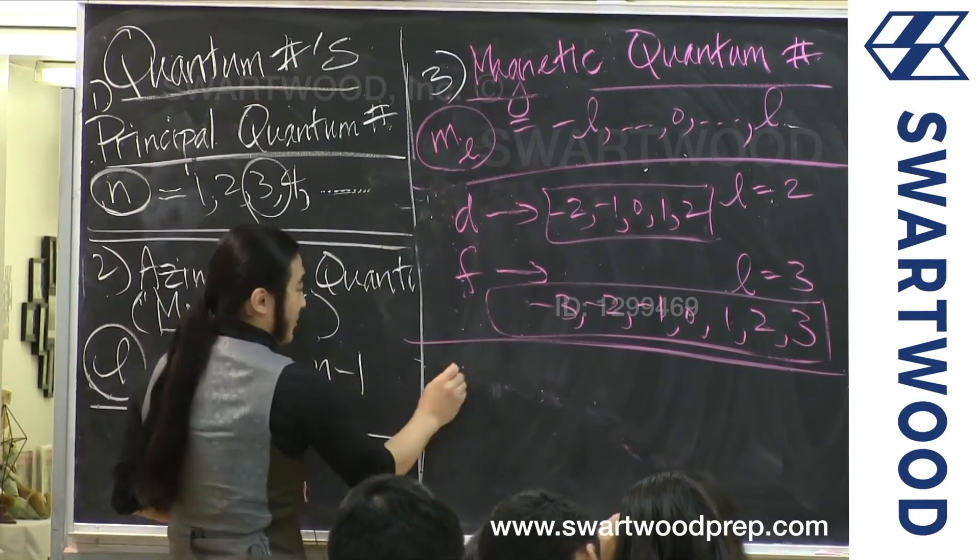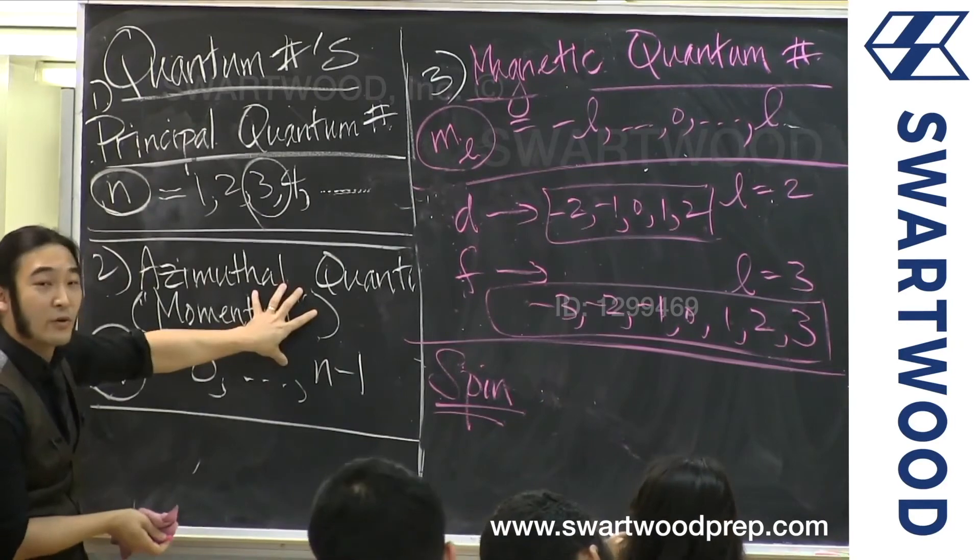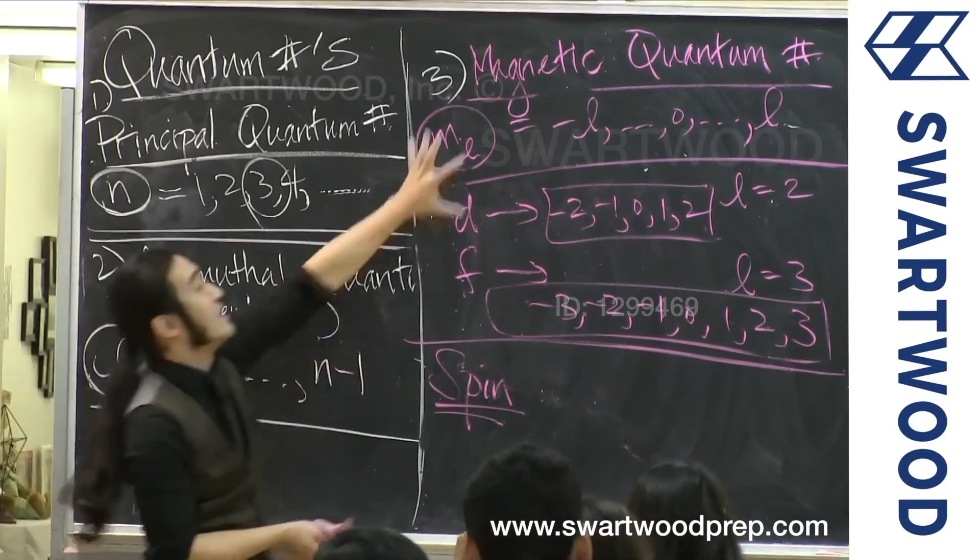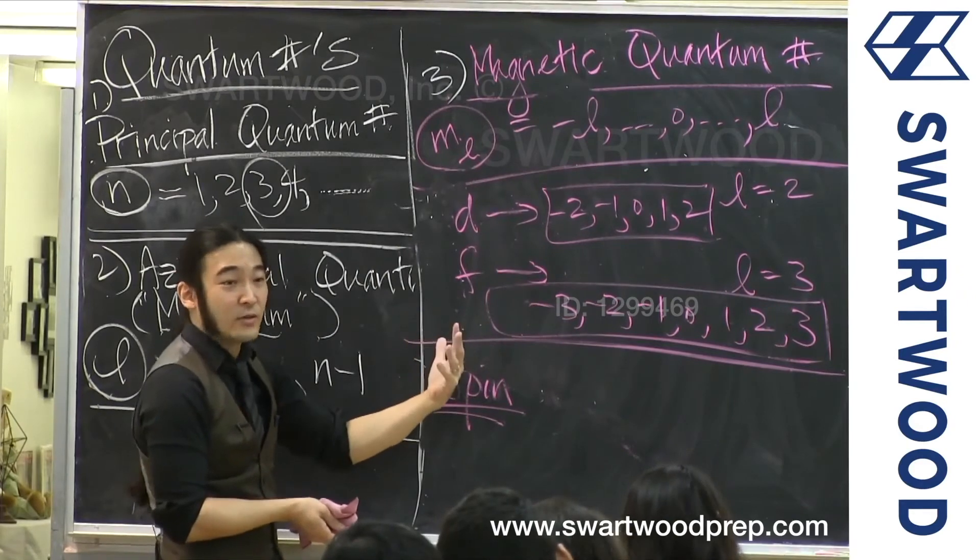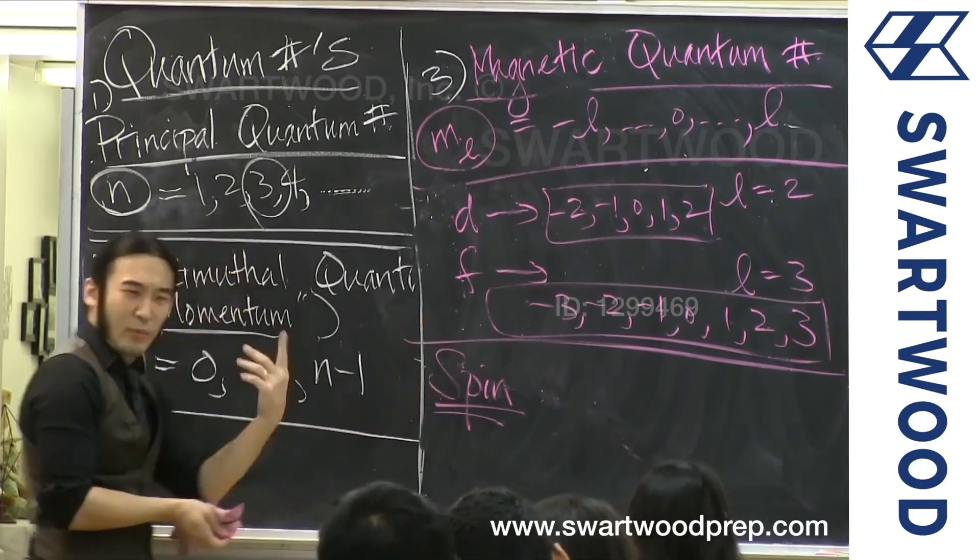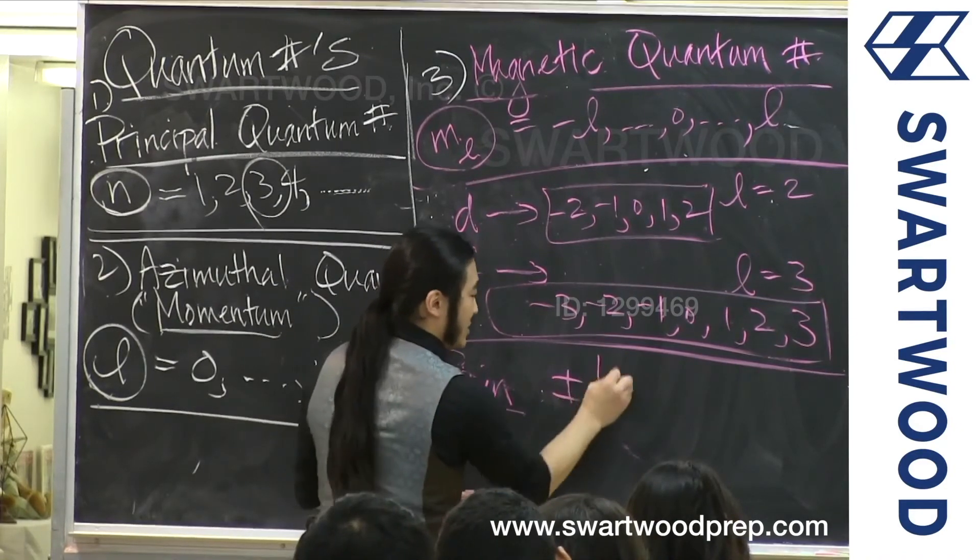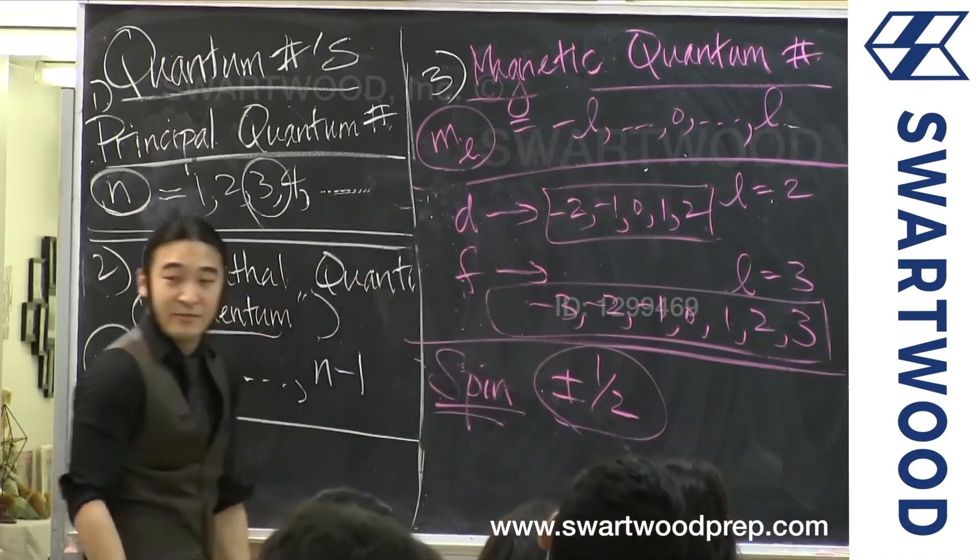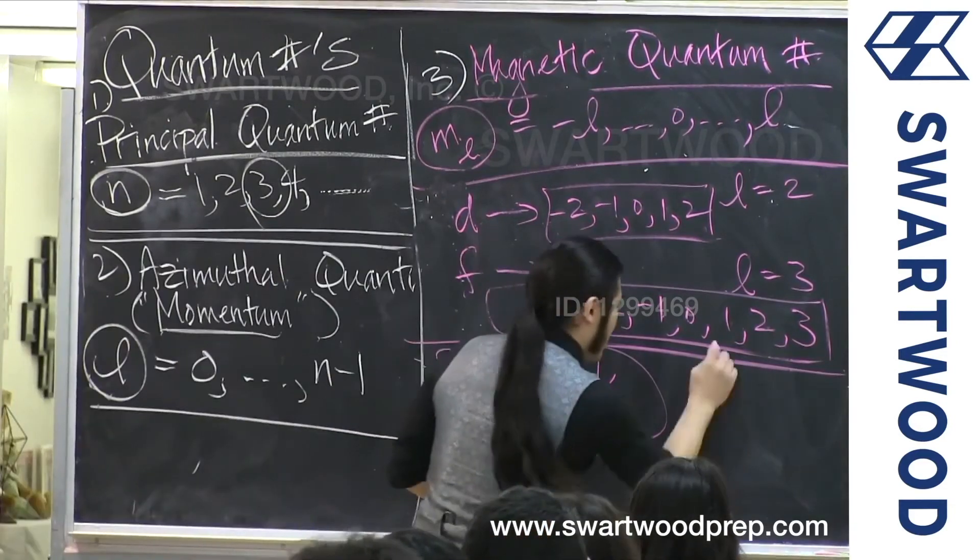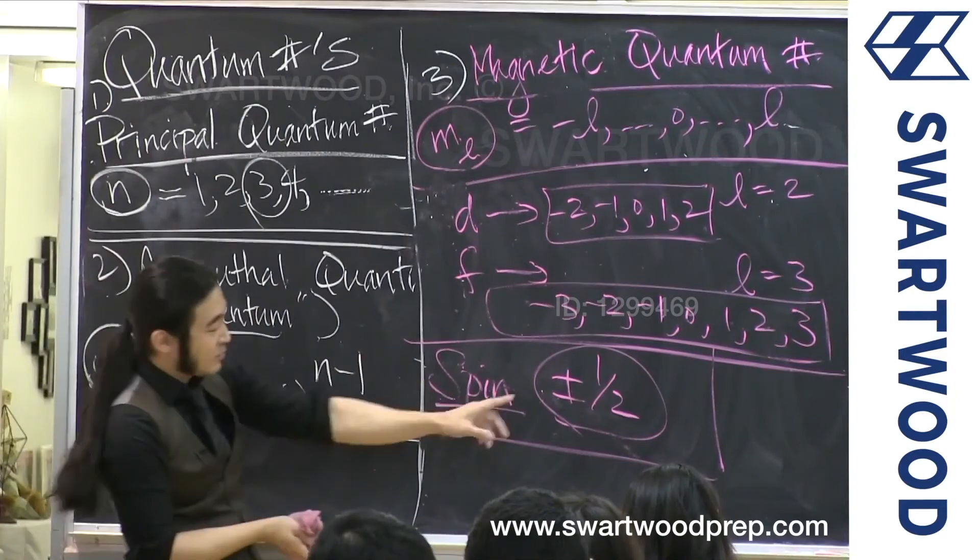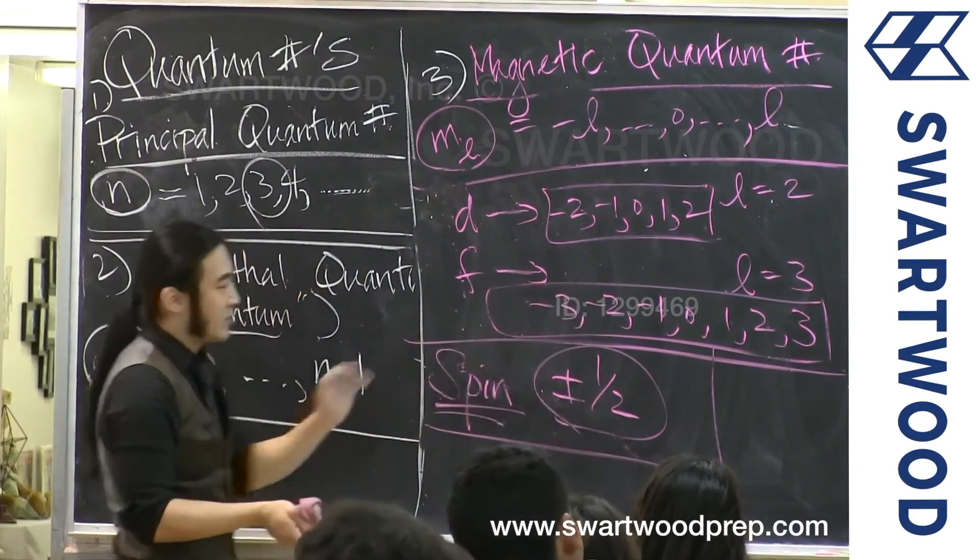Anyway, so now the final thing. We said even if you knew how far out you are, what orbital type you have, the exact orbital, you still don't know which electron. So to nail the electron, you need one more guy, spin. You could call it smiley and frowny. They just happen to use the equations and call it plus and minus a half. Plus a half names one guy, minus a half names the other. So no biggie.